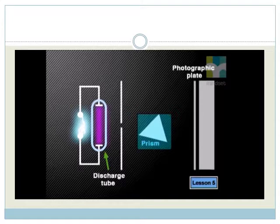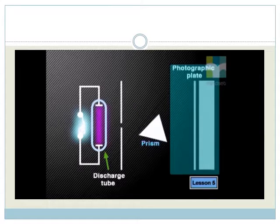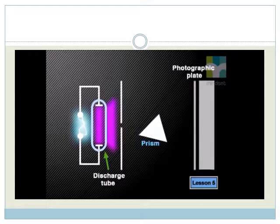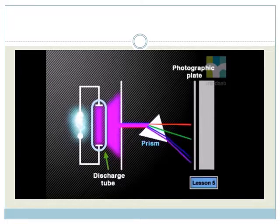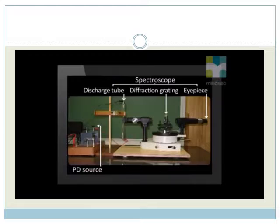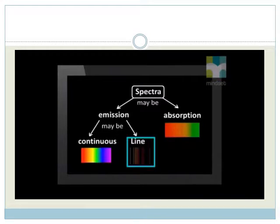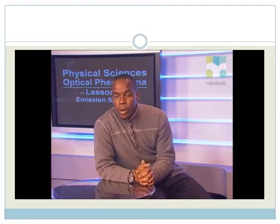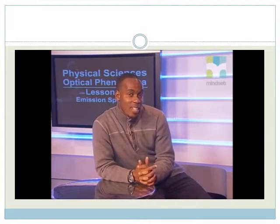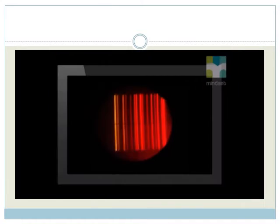In this representation, the spectroscope has a prism rather than a diffraction grating and a photographic plate rather than an eyepiece. Notice that as light passes through the prism, it is diffracted to form lines of color rather than a continuous band of color. With a spectroscope that has an eyepiece, this is what we might see — dark and bright lines. We call this a line emission spectrum. If we were experienced scientists, we would immediately know that our mystery gas is neon just from this spectrum. A different spectrum would tell us the gas is helium.